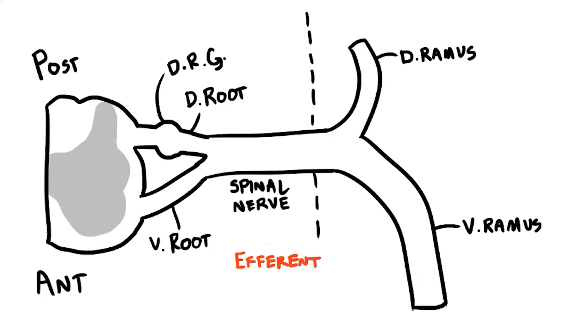First let's draw our efferent fibers. These originate as cell bodies in the ventral horn of the gray matter before heading out to the spinal nerve via the ventral root. Here the nerve fibers split with some supplying muscles in the back but most of them heading anteriorly via the ventral ramus.